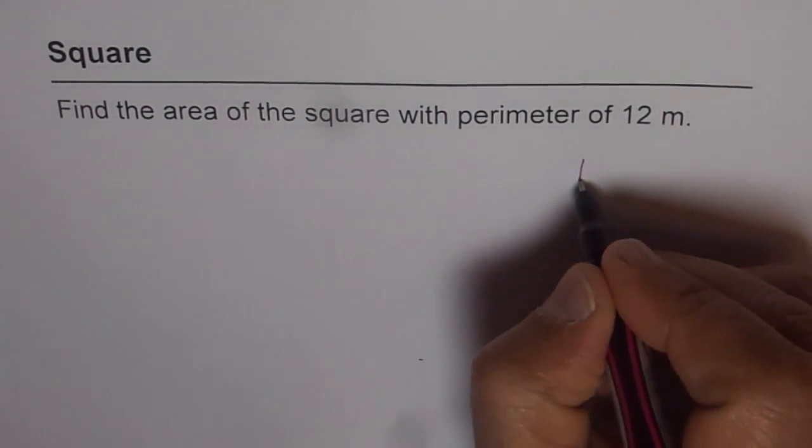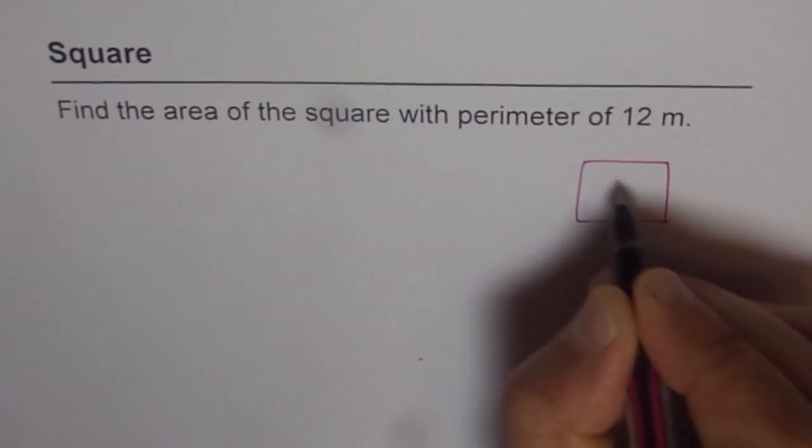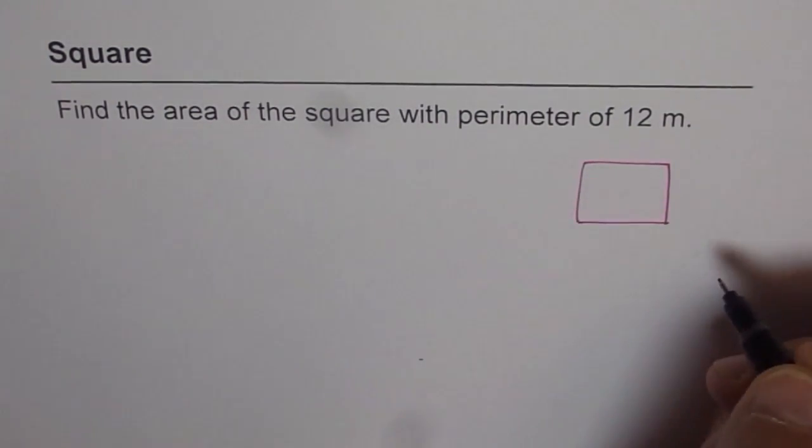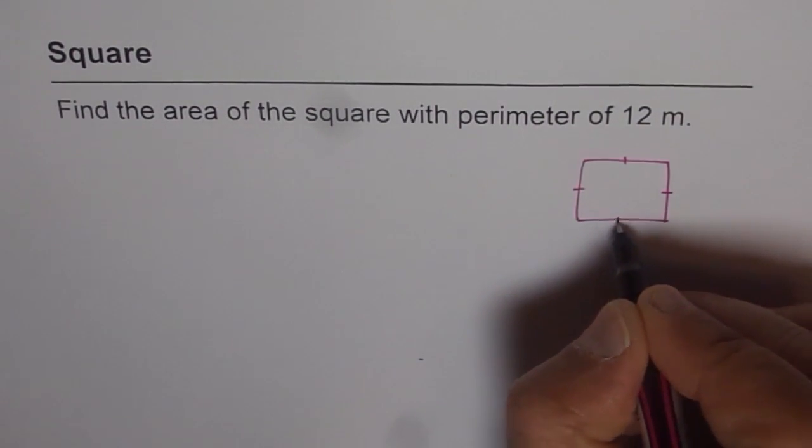Let us say that we have a square here. Let me draw one square. Square has all equal sides and the angles are right angles. What we know is all the 4 sides are equal.